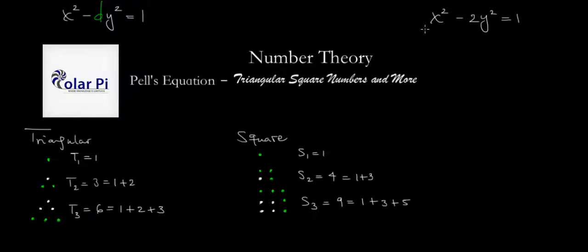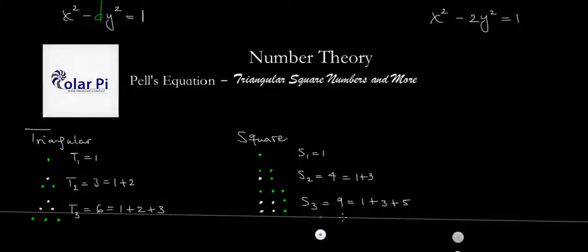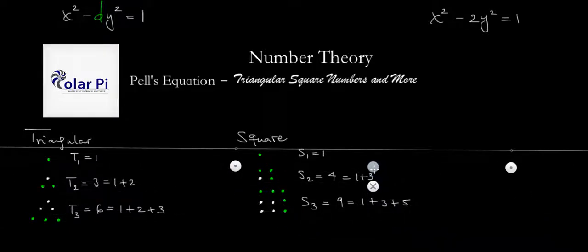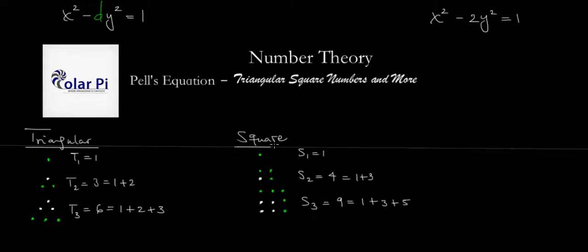Let's focus on this equation in this video. Now, I've already drawn some triangular numbers here, and I've drawn some square numbers. There's a clear pattern we can identify, which is that the triangular numbers in general are just a sum up to n. The nth triangular number is the sum of the integers up to n. For the square numbers, it's a sum up to 2n minus 1.